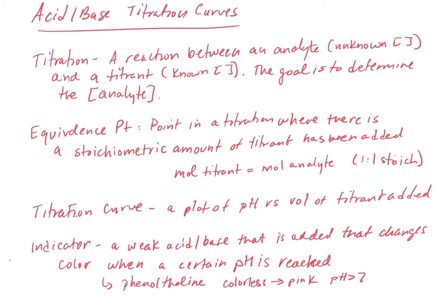If you don't have a pH meter, another way to find the equivalence point is to use an indicator. We're not going to be dealing with redox titrations in this chapter. In the context of acid-base reactions, an indicator is typically a weak acid or base that is some kind of colored dye.